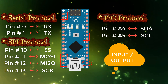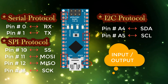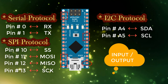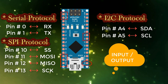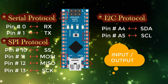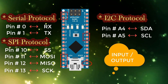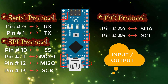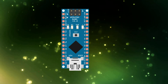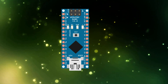We can also use software serial in Arduino Nano. Arduino Nano has only one hardware serial port, but if you are working on some project where you have to interface two serial modules with Arduino Nano, then in that case you have to create a software serial in Arduino.